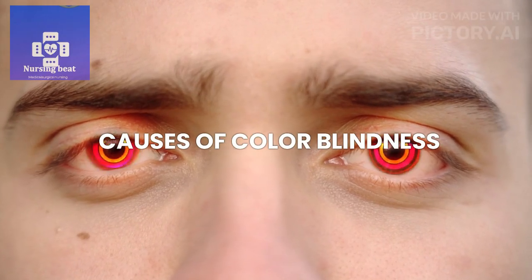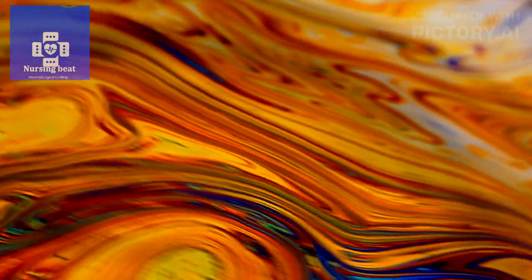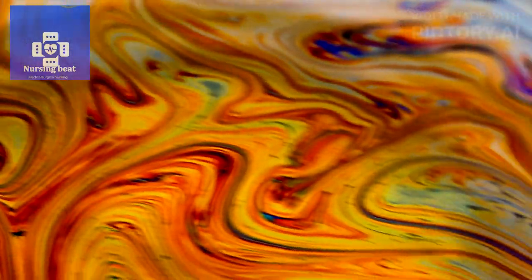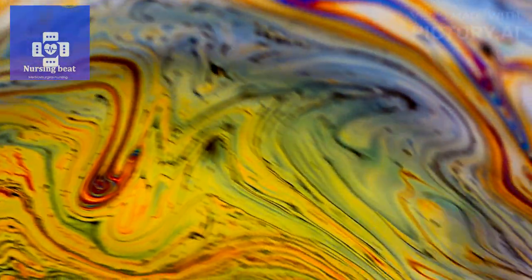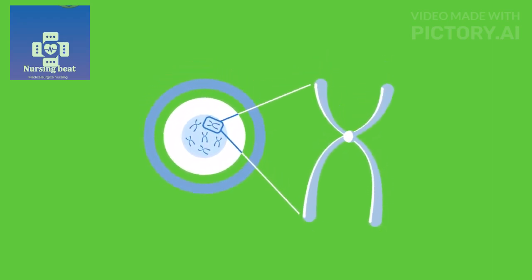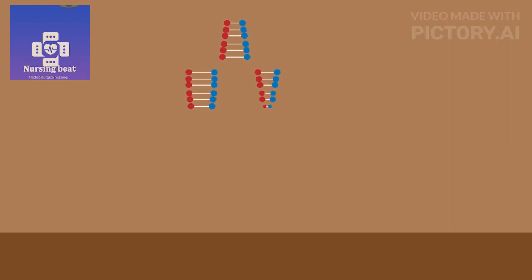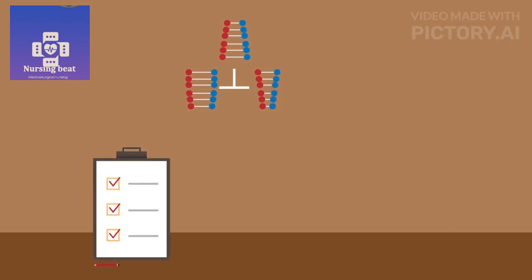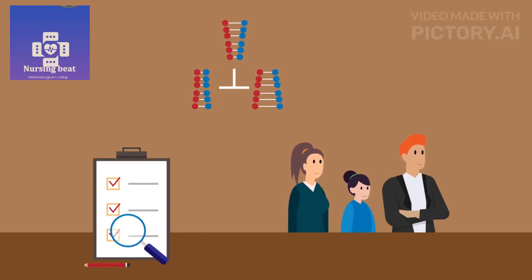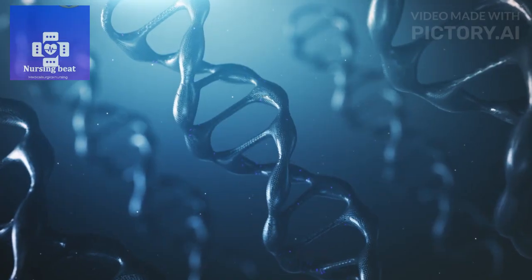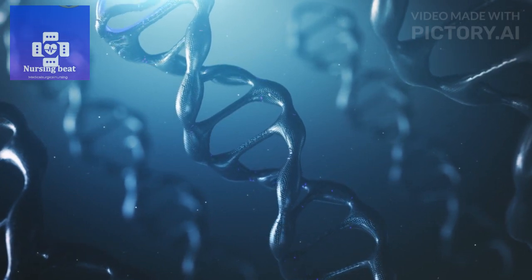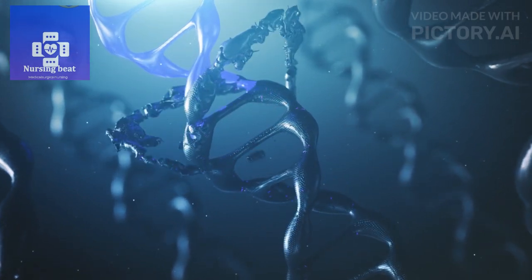Causes of color blindness: color blindness is primarily caused by genetic mutations affecting the genes responsible for producing color-sensitive pigments in the cone cells of the retina. These genes are located on the X chromosome. Since males have only one X chromosome, they are more likely to inherit color blindness if their X chromosome carries a mutated gene. Some cases also arise due to spontaneous genetic mutations during development.